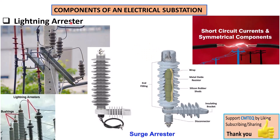A lightning arrester, as the name implies, is basically the law enforcement against lightning. So what happens when a lightning strikes? A lightning, when it strikes, it induces a high voltage. That high voltage induced by lightning is often not welcome by the electrical equipment that is being attacked by the lightning. So you call in the lightning arrester to basically divert that high voltage created by the lightning onto ground. That is the work of a lightning arrester — it diverts the high voltage induced by lightning onto ground.